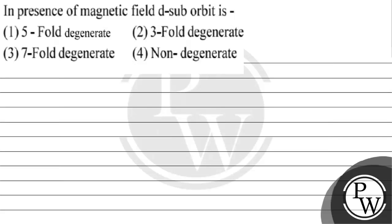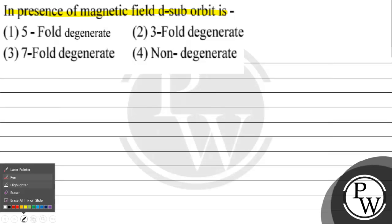Hello, let's read this question. The question says: in presence of magnetic field, D sub orbit is — option 1: 5-fold degenerate, option 2: 3-fold degenerate, option 3: 7-fold degenerate, option 4: non-degenerate.